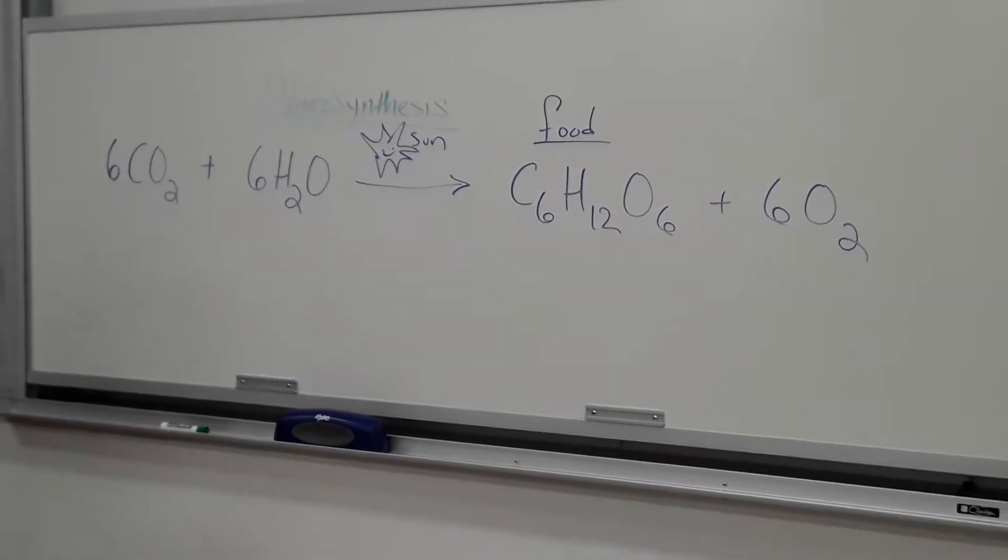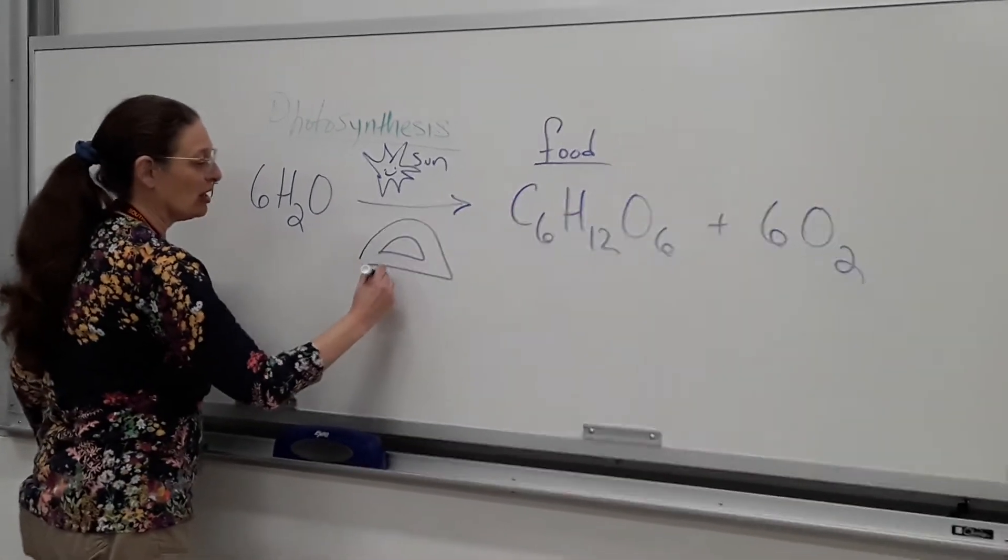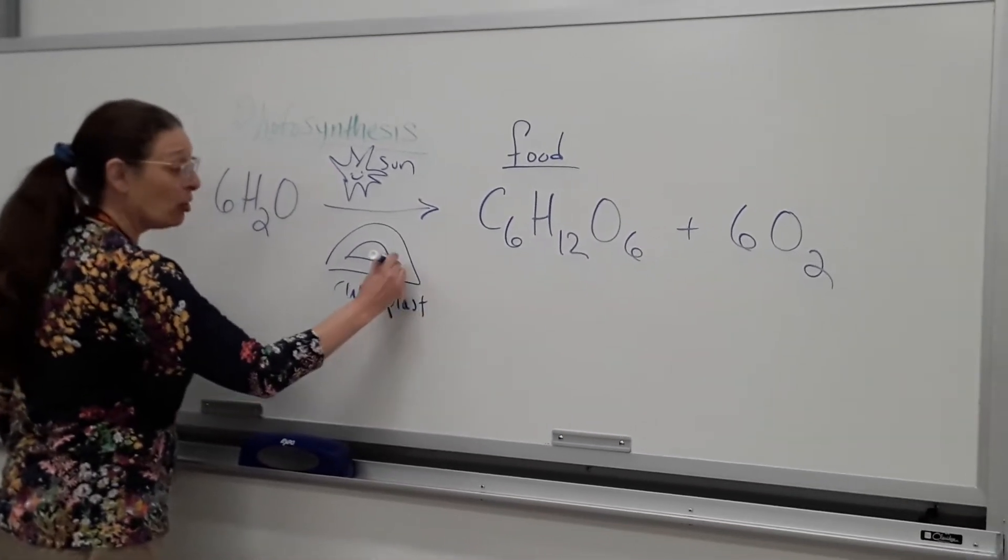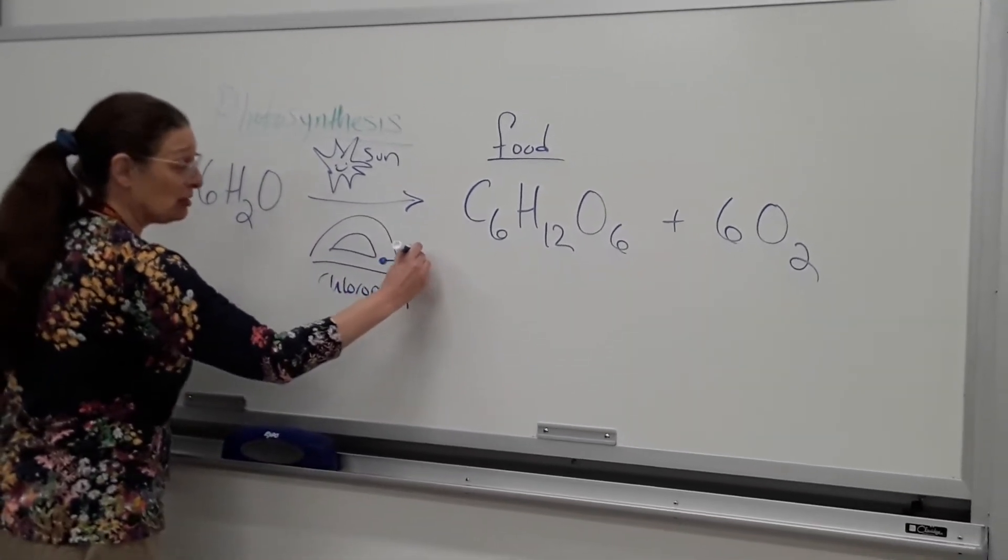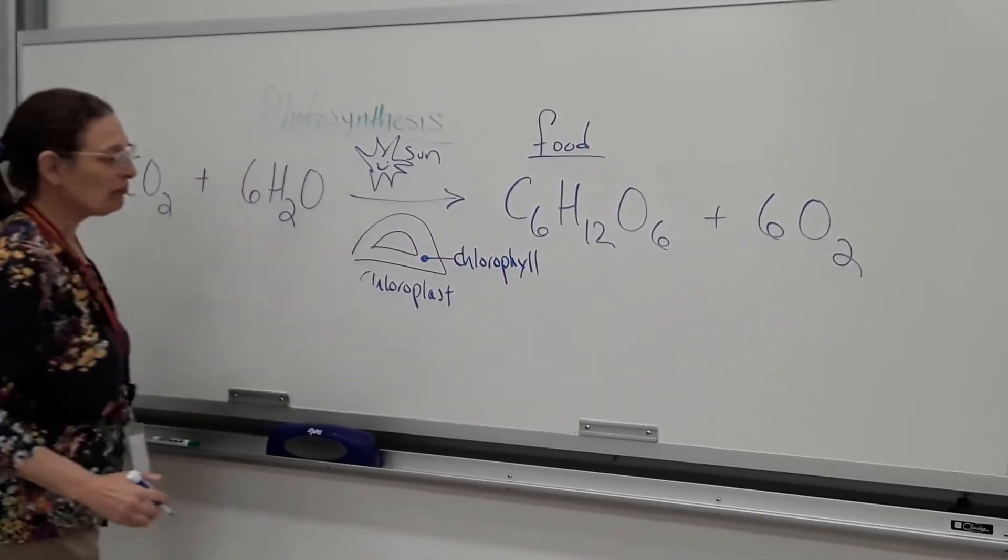We have to have a place where we can capture the sun's energy, and that's going to be captured in the organelle called the chloroplast. The chloroplast is green because it has a green pigment called chlorophyll that's able to capture the sun but not be heated up by it.